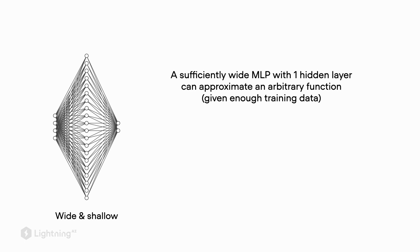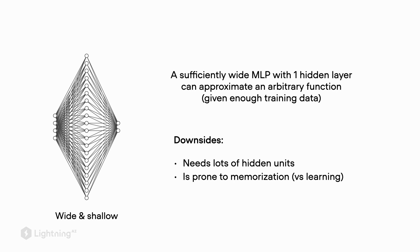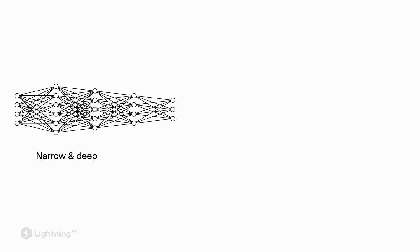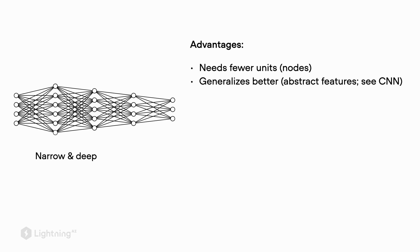We don't have to have multiple hidden layers. However, to make a single-hidden-layer network work well on a very complicated dataset requires a lot of hidden units in that one layer, which makes the network very prone to overfitting. As an alternative, a narrow and deep multilayer perceptron needs fewer hidden units in total to achieve the same expressivity. Needing fewer units helps the network generalize better to new data, making it less prone to overfitting.